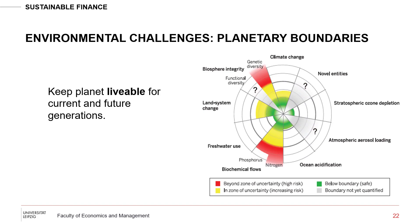When it comes to climate change, it's marked as yellow — a zone of uncertainty — so we have an increasing risk, and it may actually be turning red right now. When it comes to biosphere integrity and genetic diversity, it's actually beyond the zone of uncertainty; we have a high risk of losing species and biodiversity. The same applies to phosphorus, nitrogen, and ocean acidification, where levels of acidic substances in the oceans are increasing.